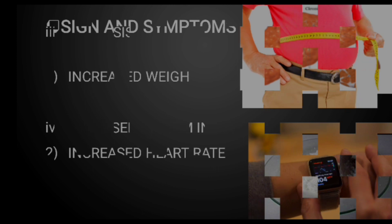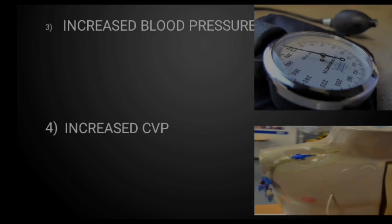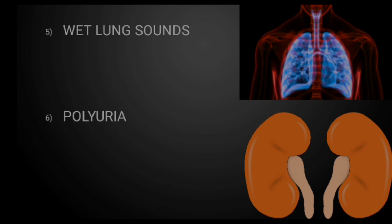Now let's look at the signs and symptoms of hypervolemia. First is increased weight — this is water weight, not fat weight. Second is increased heart rate; the heart will push fluid forward and the pulse will be bounding. Third is increased blood pressure — increased volume means increased pressure. Fourth is increased CVP. Fifth, regarding respirations, you will hear wet lung sounds, referred to as crackles, heard with a stethoscope. This is due to back flow of fluid from the heart dumping into the lungs, causing pulmonary edema.